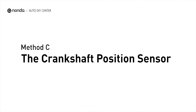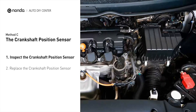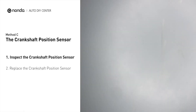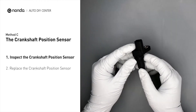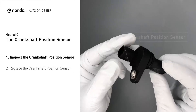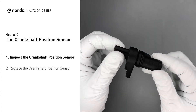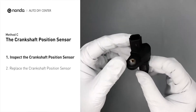Method C: the camshaft position sensor. The camshaft position sensor is located in the valve cover near the top of the engine, or it can be located at the front or rear of the cylinder head. First, carefully remove the camshaft position sensor from the vehicle. Visually inspect the sensor to make sure it hasn't been contaminated by a leak from another engine component.